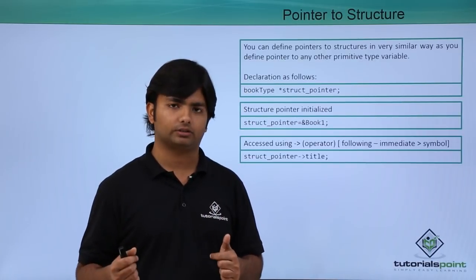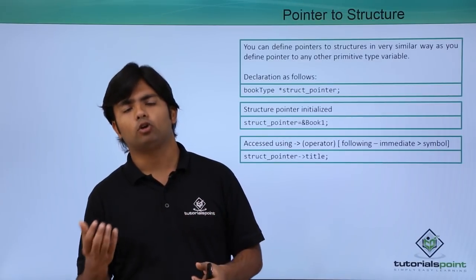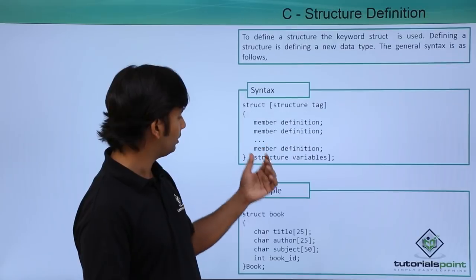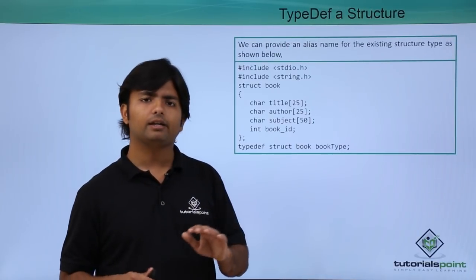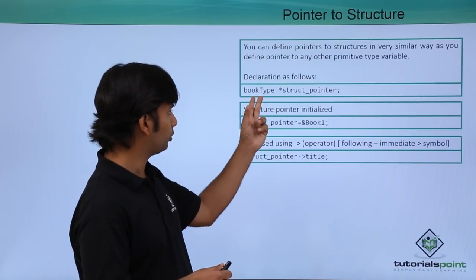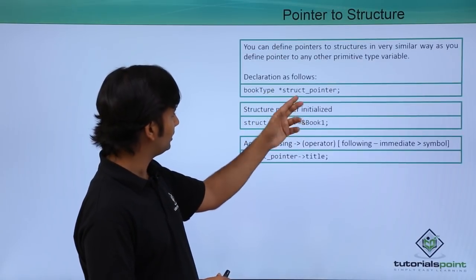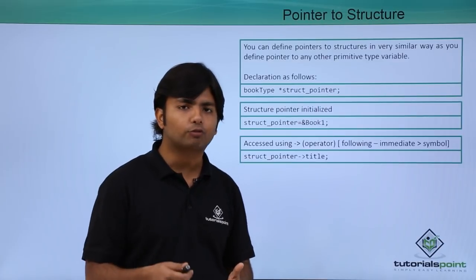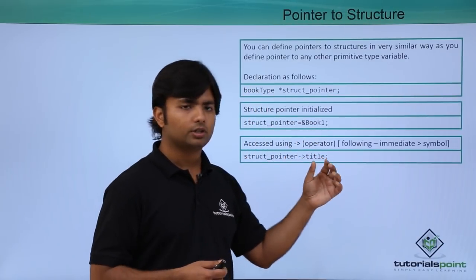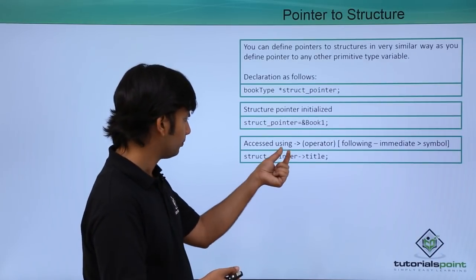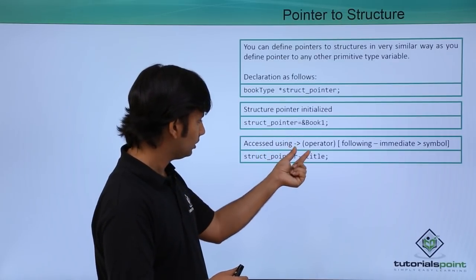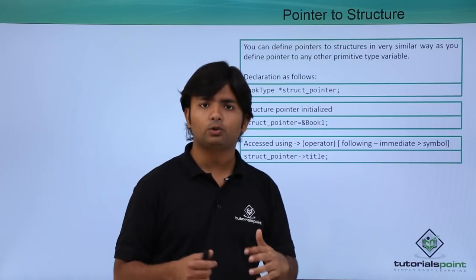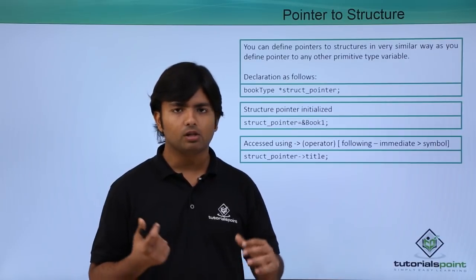Now if I talk about pointers — for example, for integer I can define a normal variable as well as a pointer. Similarly, I can define a pointer variable for a structure type. Like book_type — using the typedef alias name — followed by an asterisk for the pointer name. If you want to access any field of this structure using the pointer, you use the arrow operator, which is the hyphen and greater-than symbol combined. So struct_pointer->title accesses the title field through the pointer.